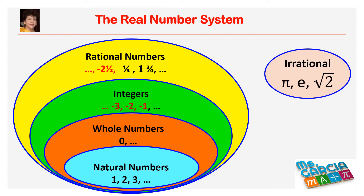The set of natural numbers, also known as counting numbers, contains the elements 1, 2, 3, etc. The set of whole numbers includes all the elements of the natural numbers plus the number 0. The set of integers includes all the elements of the set of whole numbers and the opposites or negatives of all the elements of the set of counting numbers. The set of rational numbers includes all numbers that can be written as a fraction or as a ratio of integers.